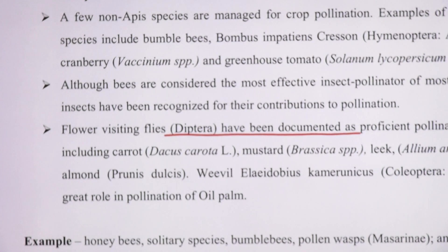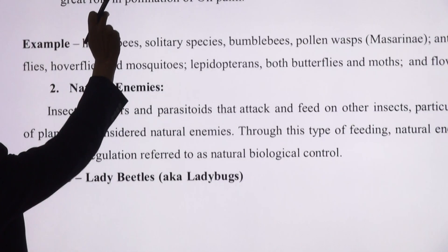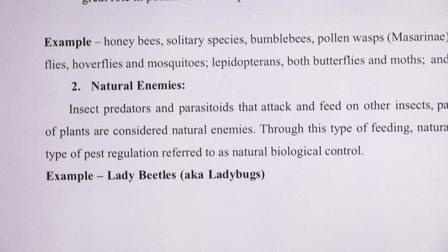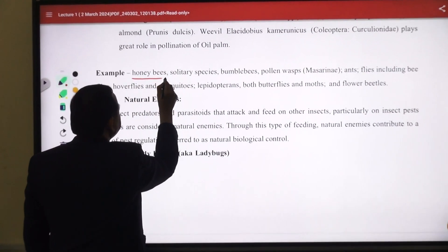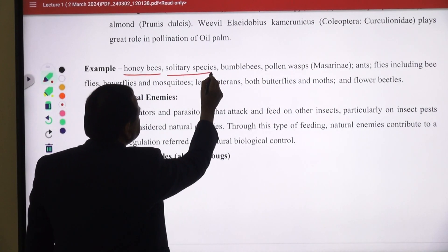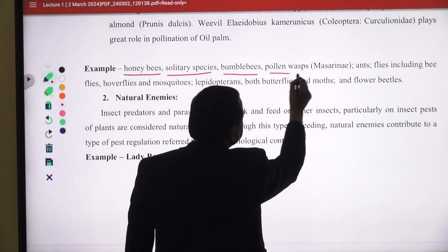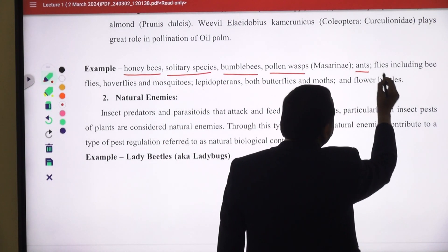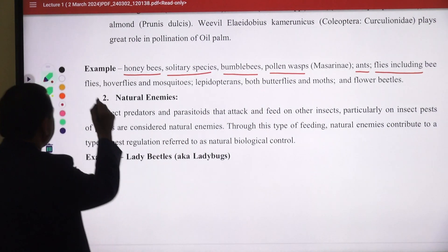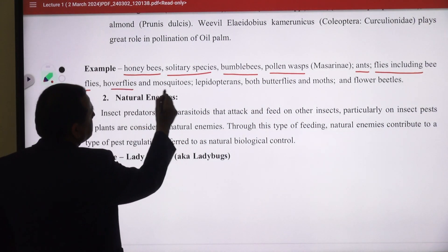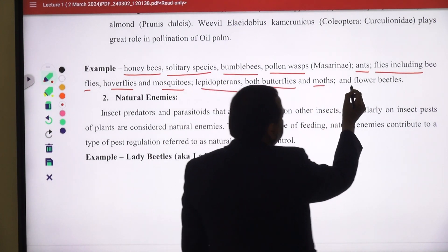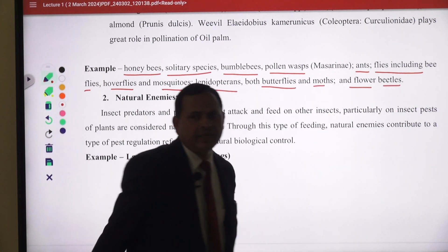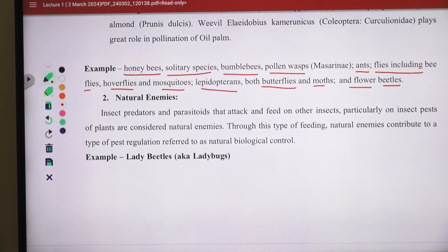Pollinators also play an important role in pollination. For example, honey bee is an important pollinator, along with solitary bees, bumblebees, ants, and flies — including hoverflies and mosquitoes. Lepidoptera — both butterflies and moths — and some flower beetles also play an important role in cross-pollinated crop pollination.